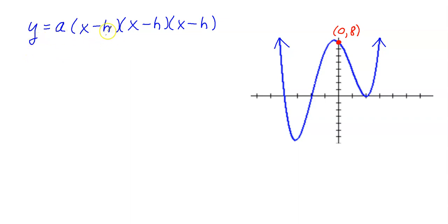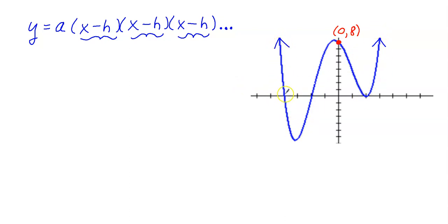You're probably wondering why I wrote X minus H three times. That's because there are three X intercepts, and the X intercepts are where the graph crosses the X axis. There's one here, one here, and one here. So since there are three X intercepts, I wrote X minus H three times. If there was another X intercept, I would have put down X minus H again.